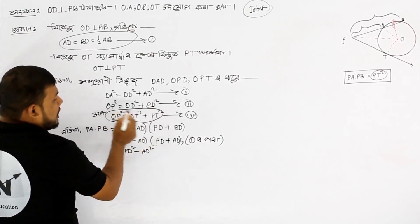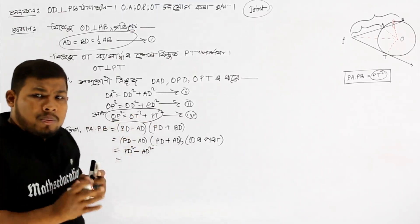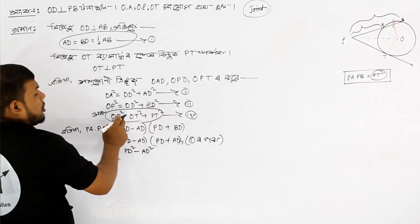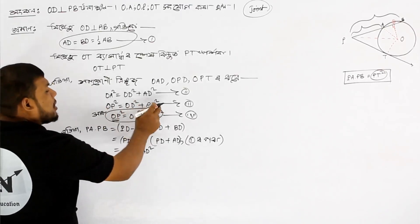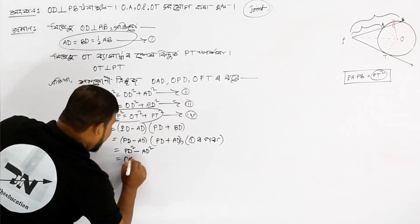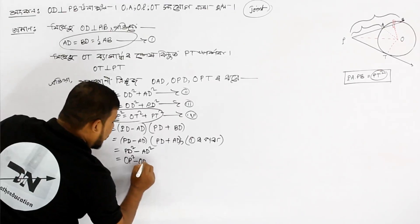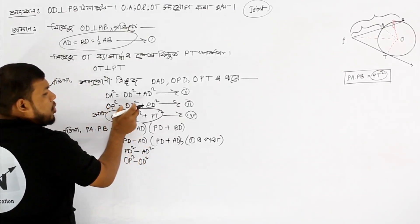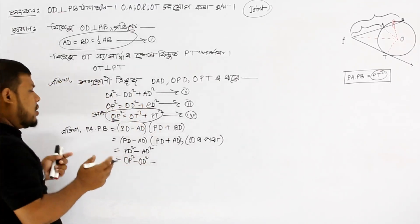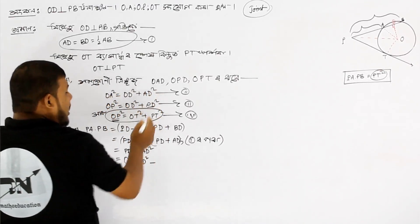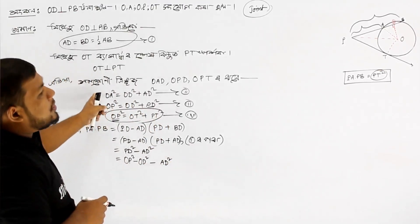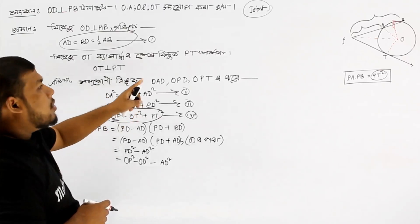Since P D corresponds to O P and P T also corresponds to O P, the common part cancels out. We can see that P T squared corresponds to O P. From equation 3, converting P D using O P, we get O P squared minus O D squared. Using equation: O P squared equal to O D squared plus P D squared, replacing P D squared, we substitute and simplify.